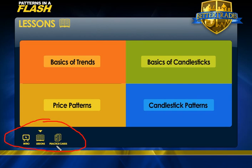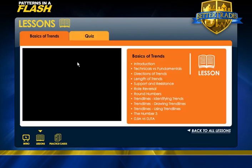The Practice Cards are a training tool to train your eyes to instantly recognize over 30 different patterns. I'm going to start off here in the Lessons, and what I want to do is click into the Basics of Trends. You'll notice here there's a table of contents, and you should go through each of these lessons in sequential order.